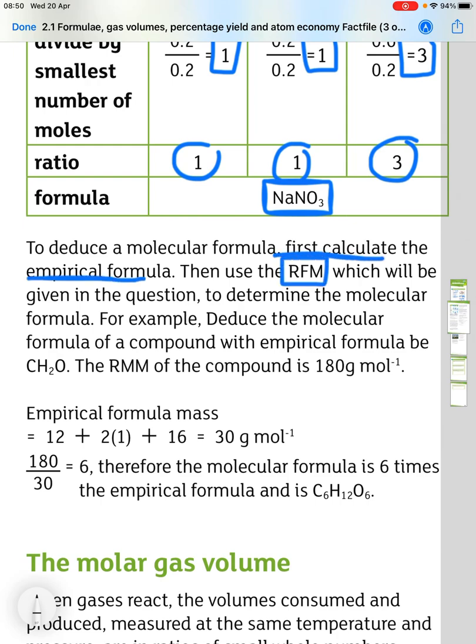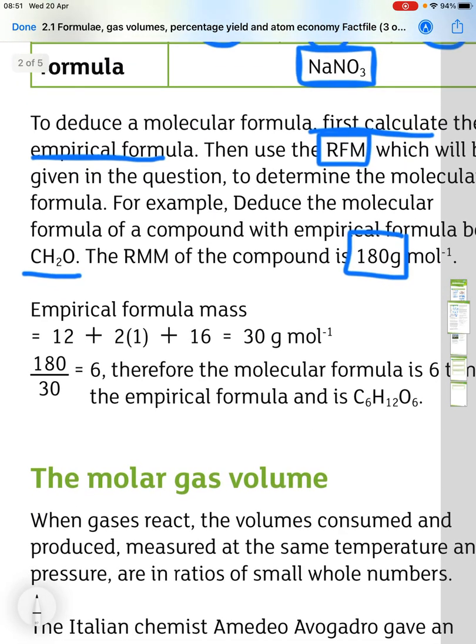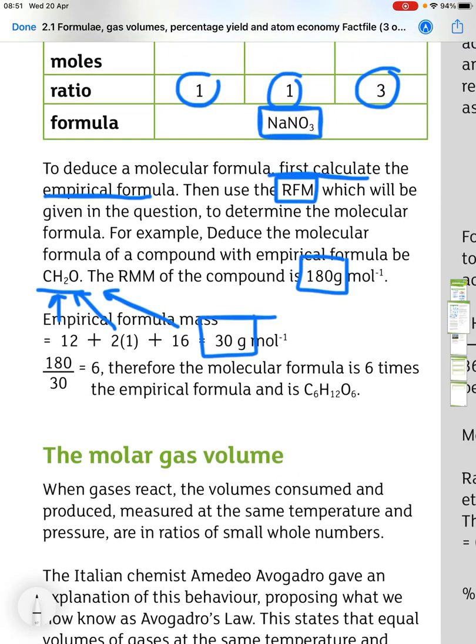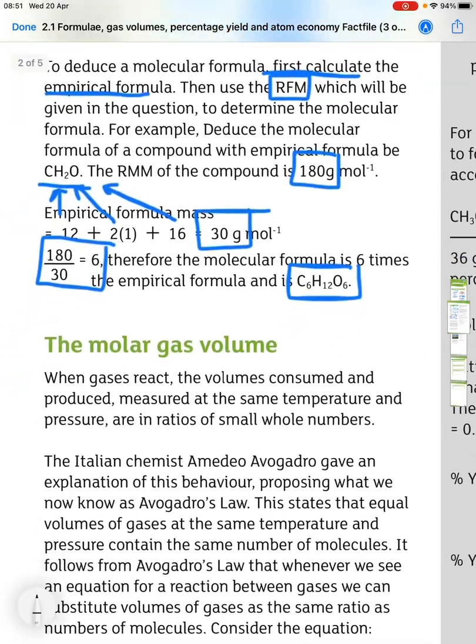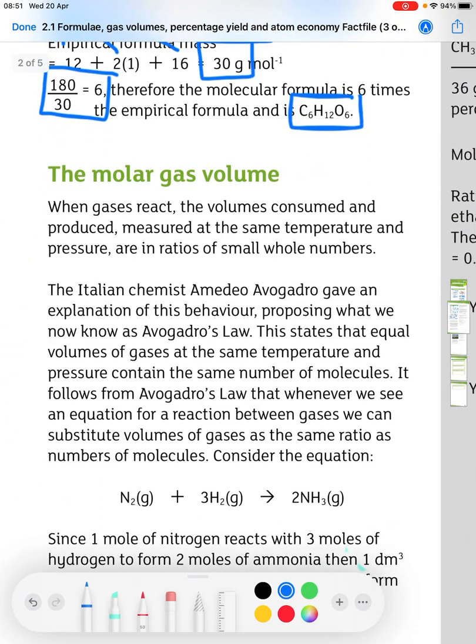To deduce a molecular formula, you first calculate the empirical formula. Then you use the RFM, which will be given in the question, to determine the molecular formula. For example, deduce the molecular formula of a compound with empirical formula CH₂O. The relative molecular mass is 180 grams per mole. So the mass of the empirical formula is 12 for the carbon, plus 2 ones for the hydrogen, and 16 for the oxygen, which gives us 30 grams per mole. We divide the formula mass, or the molecular mass, by the mass of the empirical formula. 180 divided by 30 is 6. So the molecular formula is 6 times the empirical formula, so that becomes C₆H₁₂O₆.